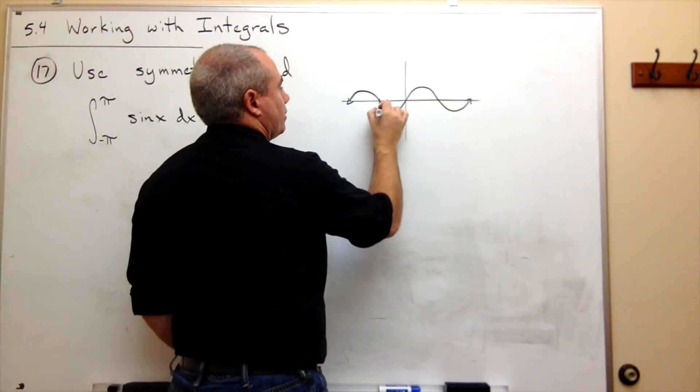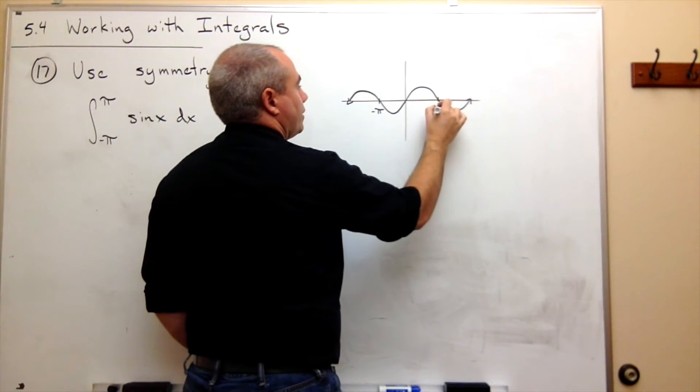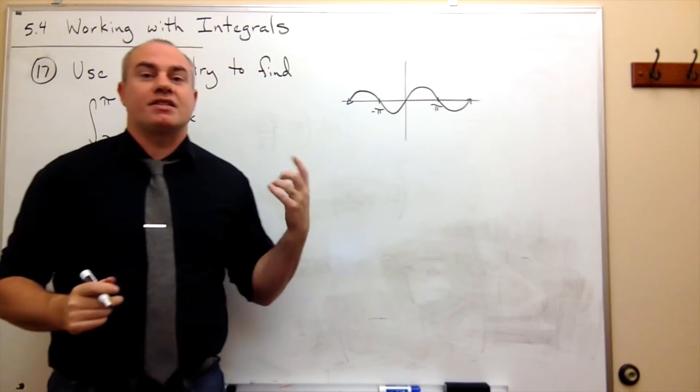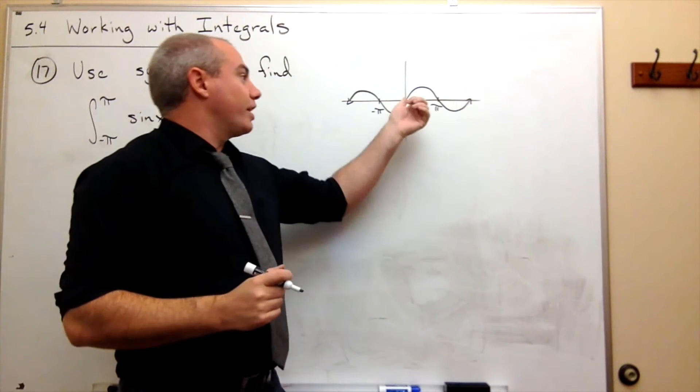Well, negative pi is back here. Pi is up here. And as we can see, this thing is symmetric about the origin.